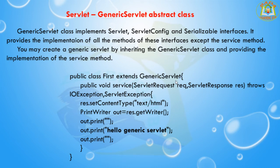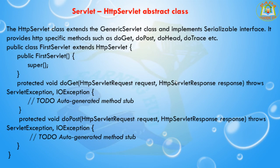The next class is the GenericServlet abstract class. The GenericServlet abstract class implements the Servlet, ServletConfig, and Serializable interfaces. It provides an implementation of all the methods of these interfaces except the service method. You may create a generic servlet by inheriting the GenericServlet class, and we need to provide the implementation of the service method. In this example, I am creating a class extending from the GenericServlet class, which already has the service method.